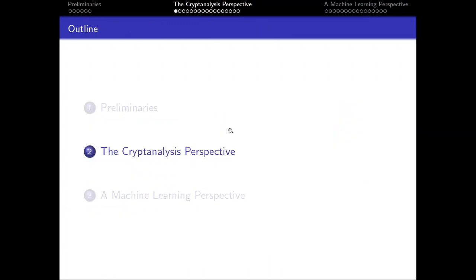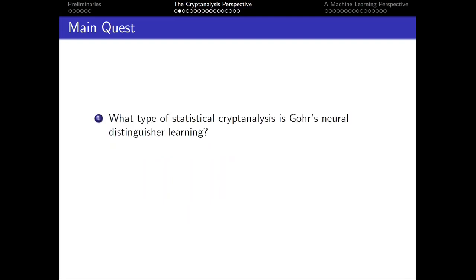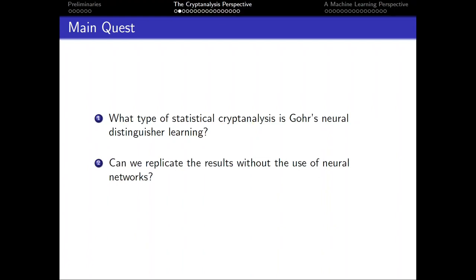Now we move on to the next part. In this part, we aim to explore two questions. The first is: what type of cryptanalysis is Gohr's neural distinguisher learning? The second is: can we actually replicate the results without using a neural network, but using techniques that cryptanalysts are more familiar with? To answer the first question, we conduct multiple experiments in an attempt to reverse-engineer what the neural distinguisher is looking for.